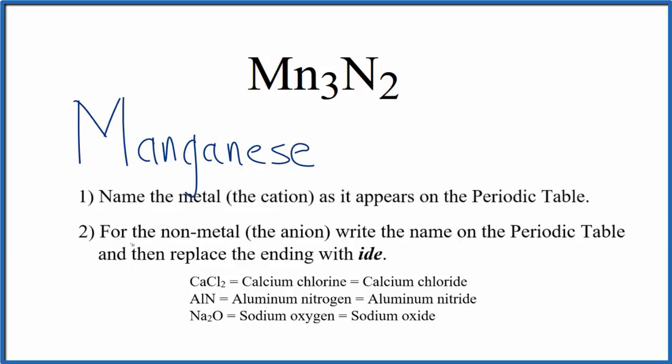And then we'll write the name for the non-metal as it appears on the periodic table. So N, that's nitrogen, lowercase n, and we cross out the ending here, this O-G-E-N, and we're going to replace that with I-D-E.